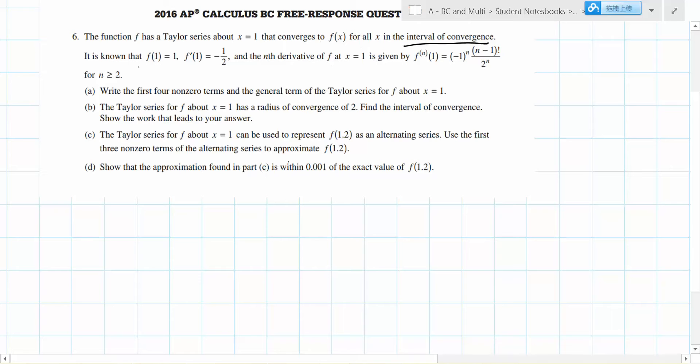It is known that f(1) equals 1, f prime of 1 equals negative 1/2, and the nth derivative at x equals 1 is given by this formula for n greater than or equal to 2.